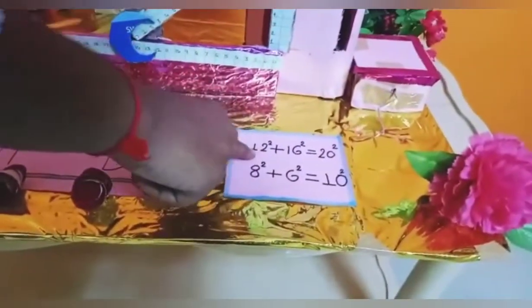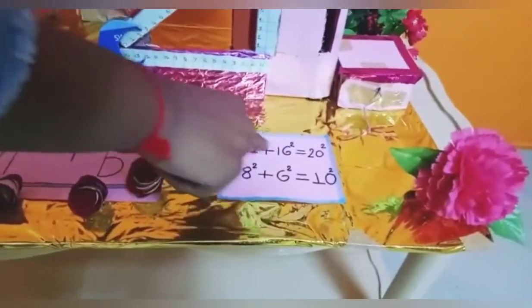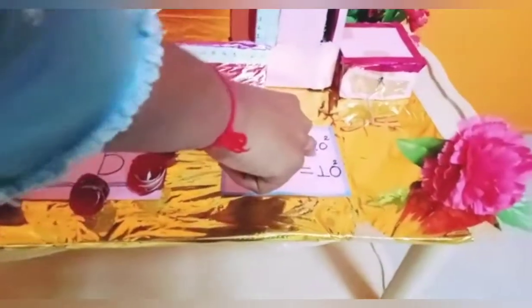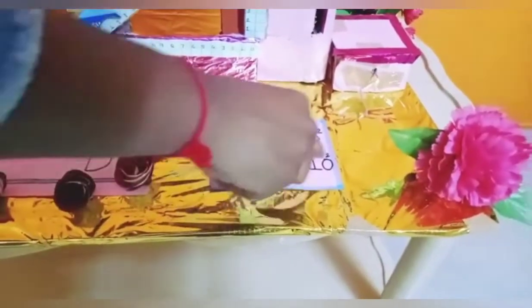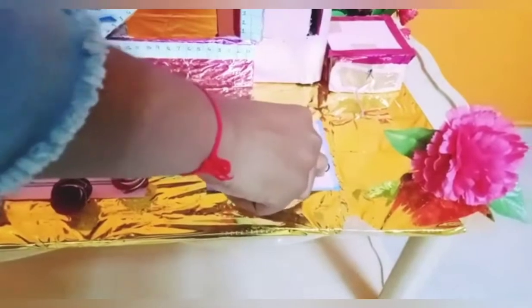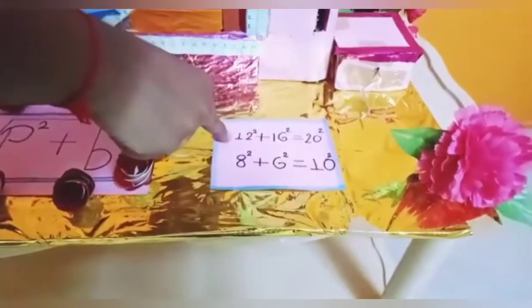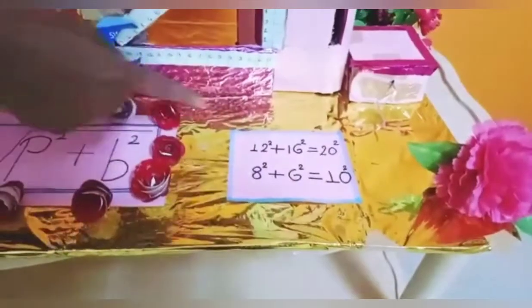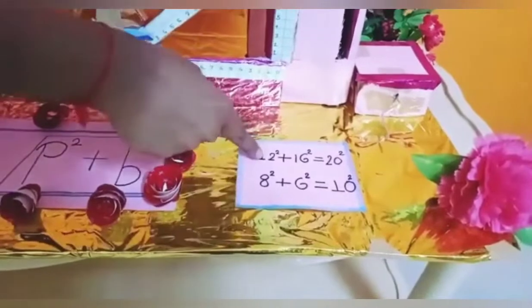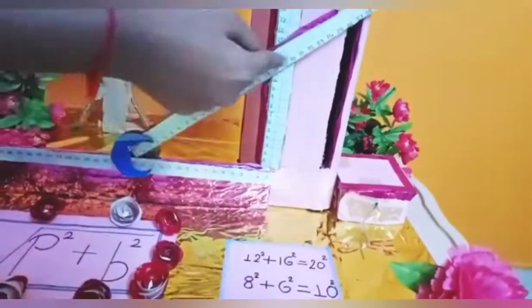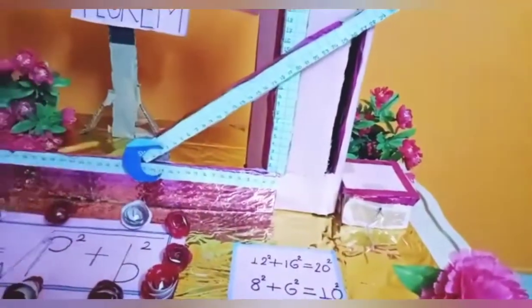Here I take two examples of Pythagoras theorem. 12 squared plus 16 squared is equal to 20 squared, and 8 squared plus 6 squared is equal to 10 squared. In the first example, 16 is the length, 12 is the height, and 20 is the hypotenuse.